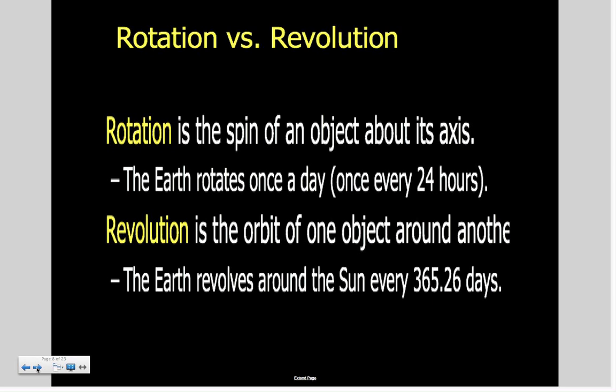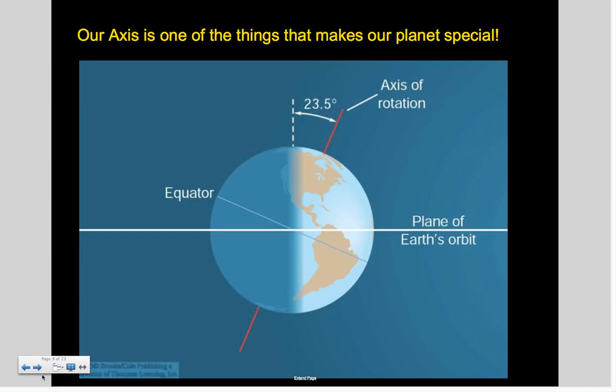The Earth rotates once a day, which takes 24 hours roughly for a full rotation. A revolution is where an object goes around or orbits another object. The Earth revolves around the Sun every 365 days—there's some decimal points that help with leap year, but for our purposes it's 365 days.